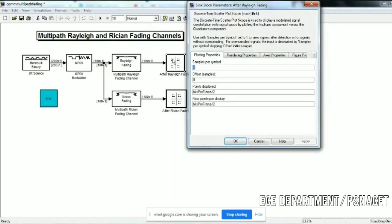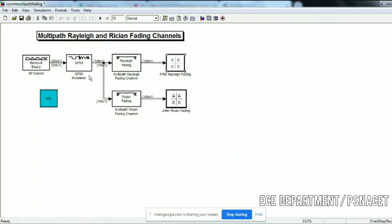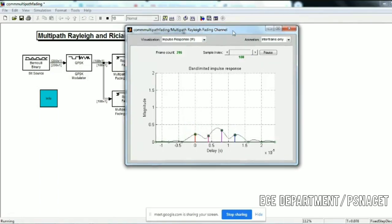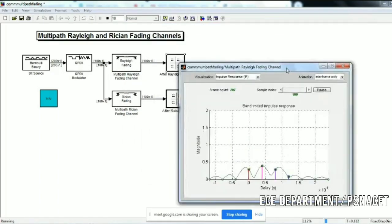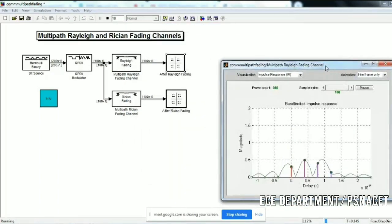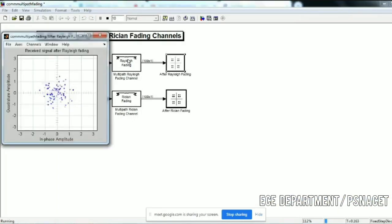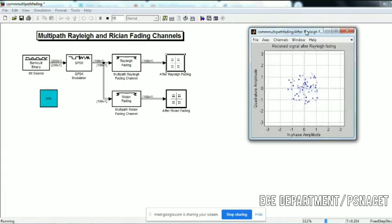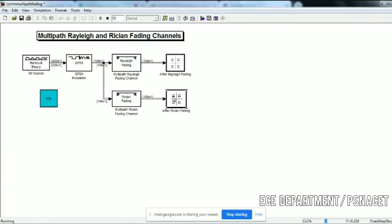We do the scatter plot after fading. I will run it. This is a bandlimited impulse response of the signal. Then we see the scatter plot of the Rayleigh fading. This is the scatter plot of the Rayleigh fading.